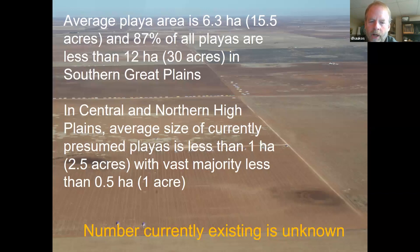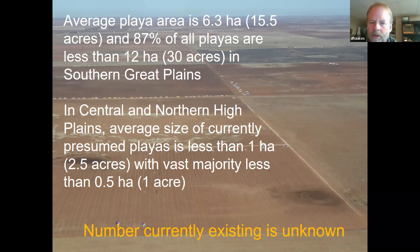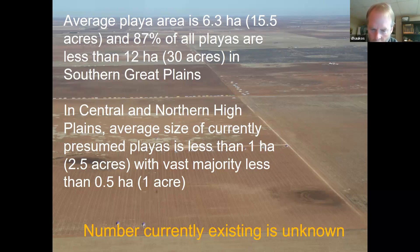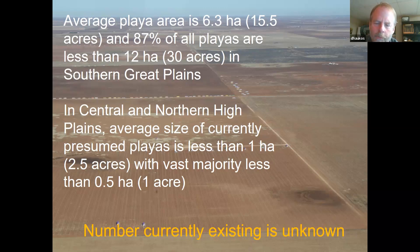On the southern great plains or the Llano Estacado, where the playas are the biggest and densest, the average size is roughly about 13 to 15 acres. About 87% are less than 12 hectares or less than 30 acres in size. However, in the central and northern high plains, playas are quite a bit smaller — most are less than one hectare or less than two and a half acres, with the vast majority less than a half an acre. The number of playas prior to settlement is unknown, and the current number of existing functional playa wetlands is also difficult to determine.